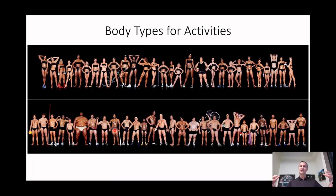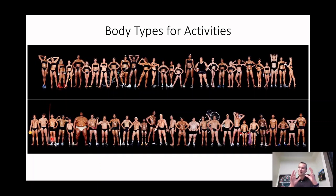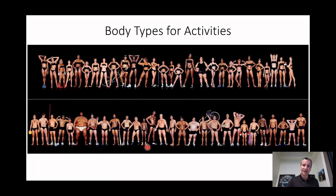If you have a bigger body mass and shorter limbs, you're going to become a power athlete — an incredible elite athlete with an ideal body type for that sport. If you're going to be a thrower or a decathlete, you'll have a combination — some length for certain things but more moderate overall. For a distance runner, leg length is going to be important, as we'll see in a moment.